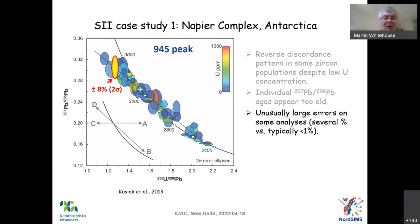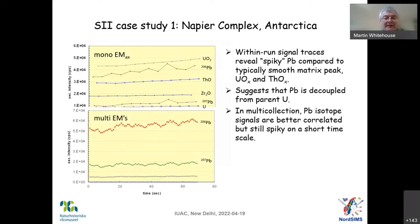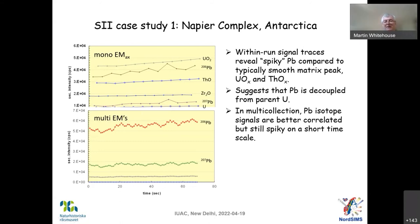We also see enormous uncertainties — compare typical SIMS errors of maybe half a percent on 207/206Pb here, versus almost 10 percent on some of these grains. When we started to understand this and looked at the run traces through time, we found very stable zirconium oxide and uranium peaks, but spiky depths in the lead peaks. This is telling us that lead is not homogeneously distributed within the grain.